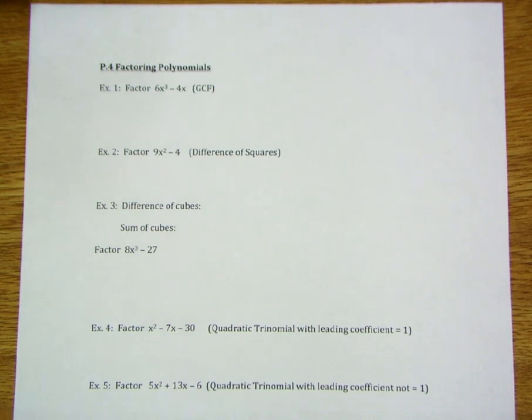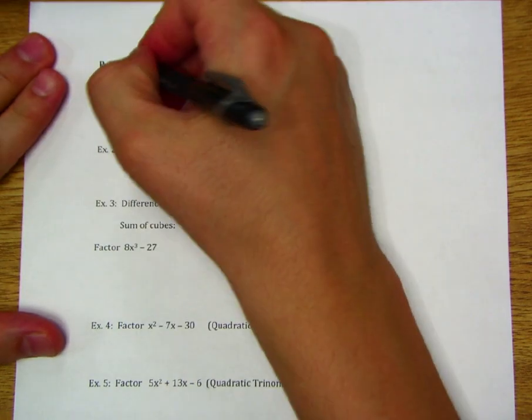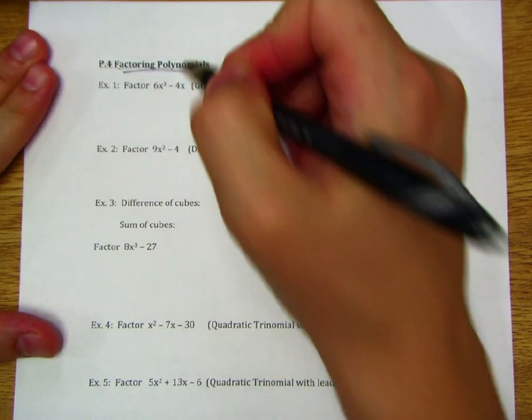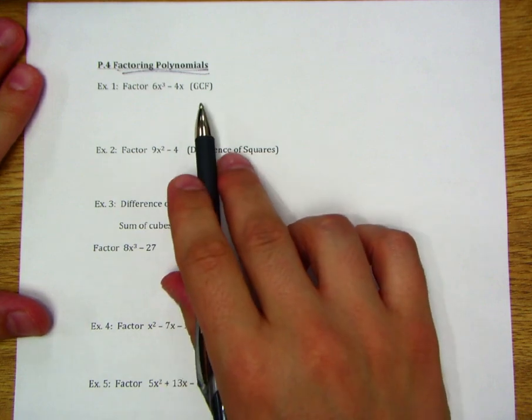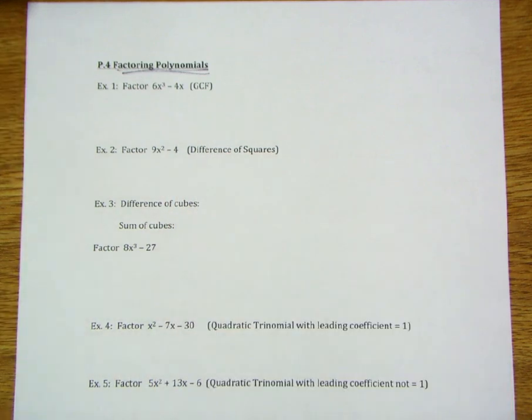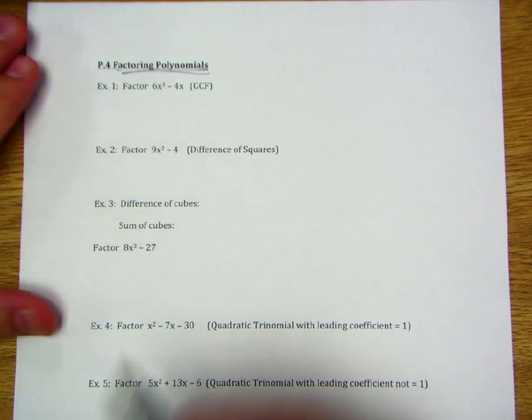Hey everybody, welcome back to another section here in Chapter P. Today we're going to be taking a look at factoring polynomials, continuing our work there with polynomials. You'll notice the first couple items here: GCF, greatest common factor, and difference of squares, what we've talked about and dealt with a little bit recently. So let's go ahead and dive on in there.